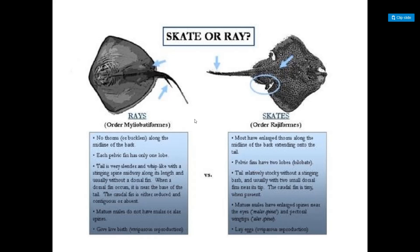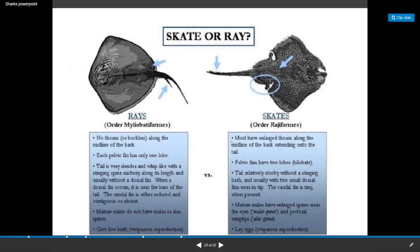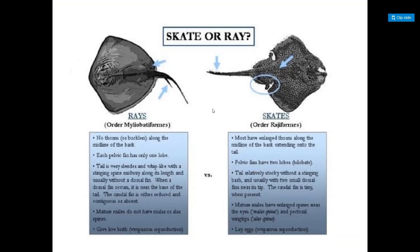Skates: most have enlarged thorns along the midline of the back extending onto the tail. Their pelvic fins have two lobes. The tail is relatively stocky without a stinging barb, and they usually have two small dorsal fins near the tip. The caudal fin is tiny when present. Mature males have enlarged spines near the eyes and pectoral wingtips. Skates lay eggs, so they are oviparous.